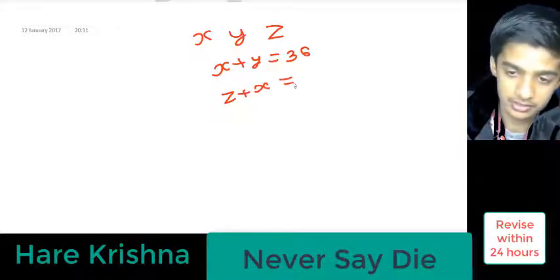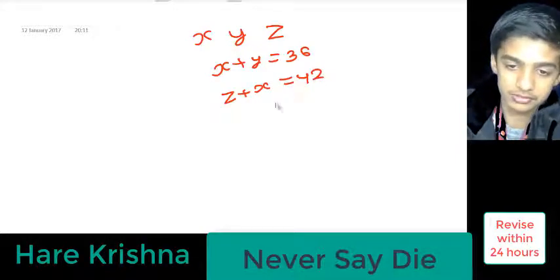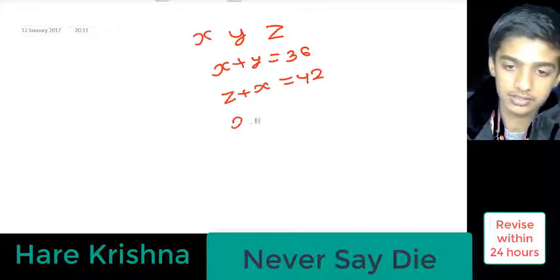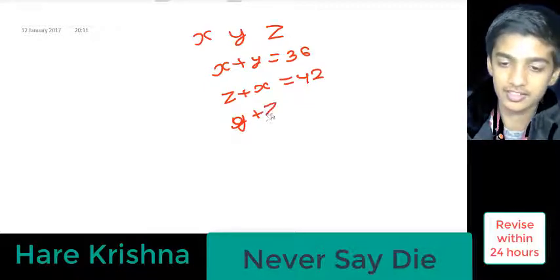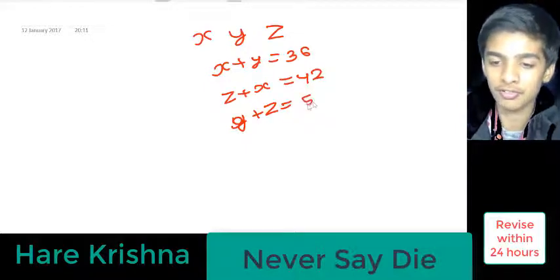z plus x is equal to 42, y plus z is equal to 50.